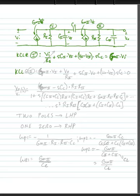If we go to node 2, we have KCL at node 2 is equal to GM2 times V1, plus Vout divided by R2, plus SC2 times Vout, plus Vout minus V1 times SCC is equal to 0.